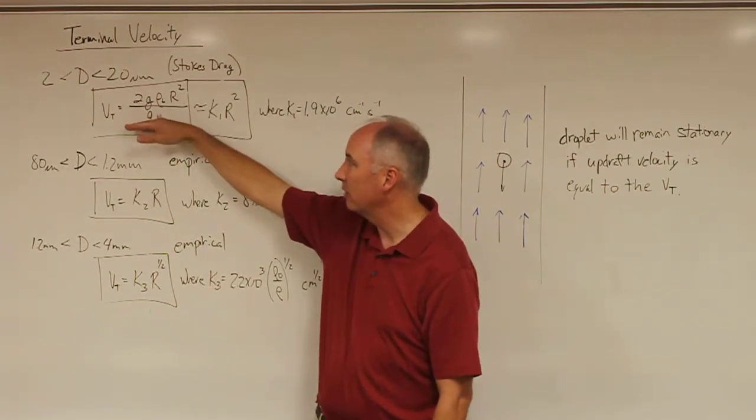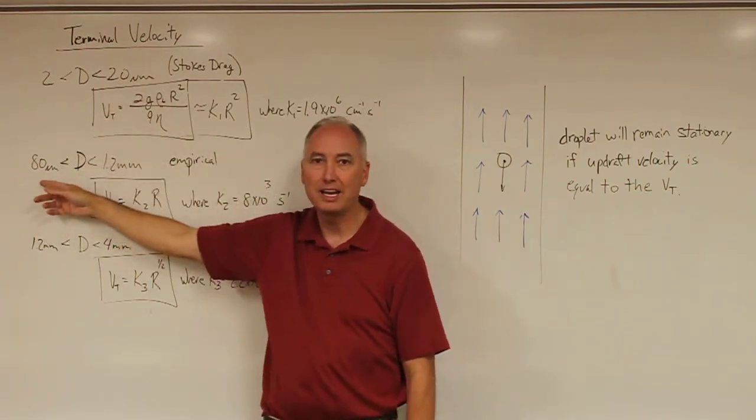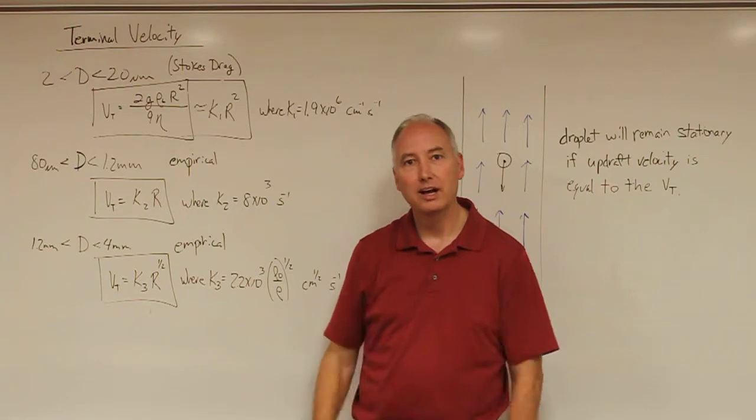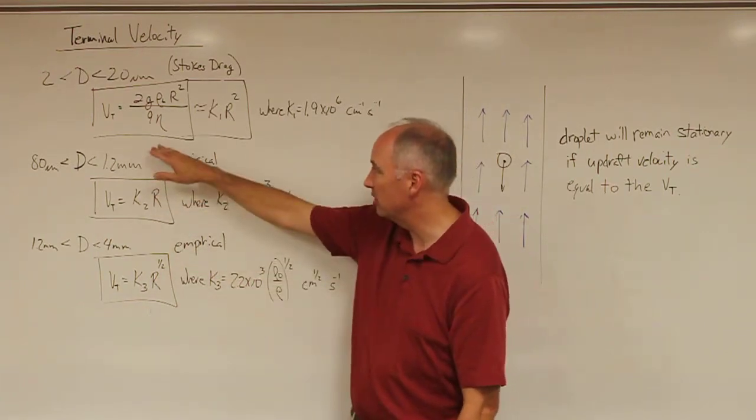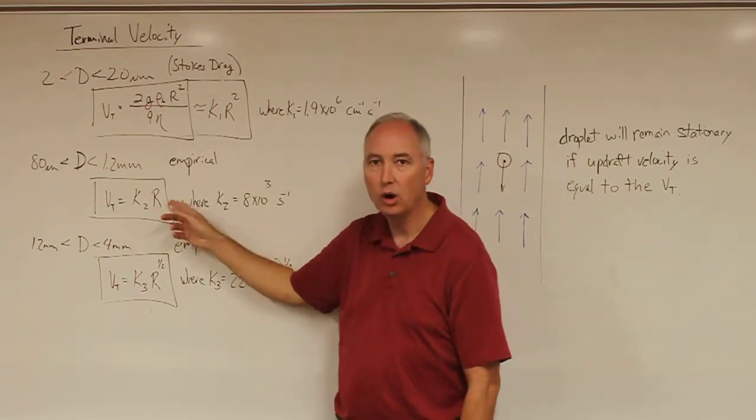Obviously, you have to figure out what you would like to do in this transition zone between 20 micrometers and 80 micrometers, but you will end up with error in each one of those locations if you decide to use the K1R squared equation or the K2R.